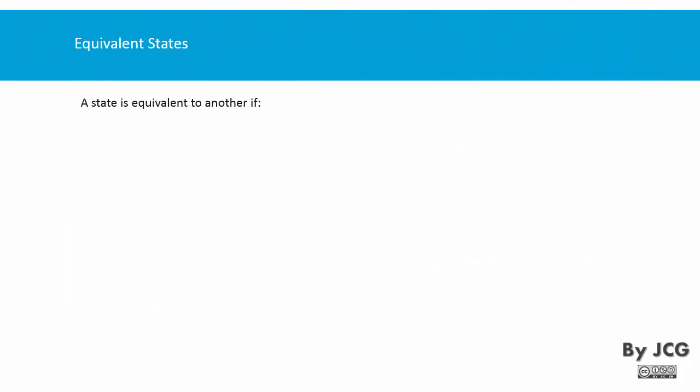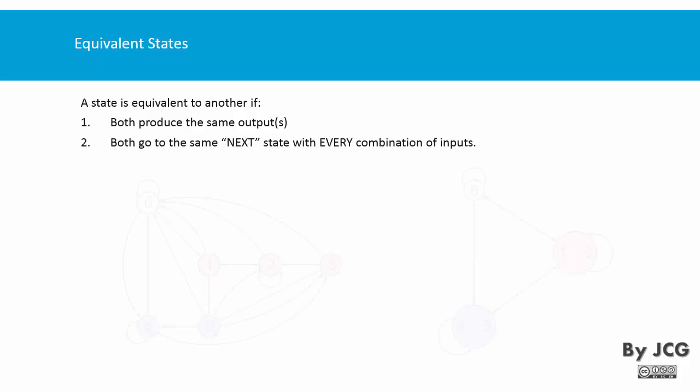In order to do this you need something called an equivalent state. A state is equivalent to another if two conditions are met. The first is that both states produce exactly the same outputs given the same conditions. Apart from that, they both need to go to the same next state with every combination of inputs.